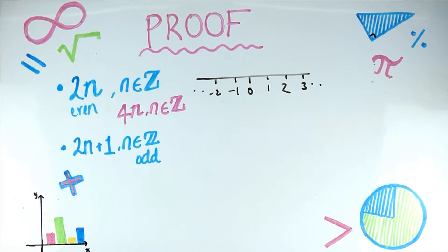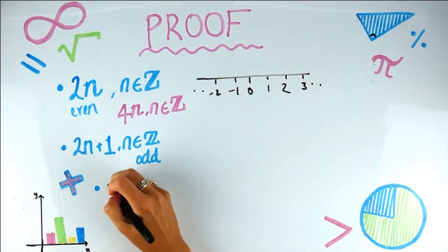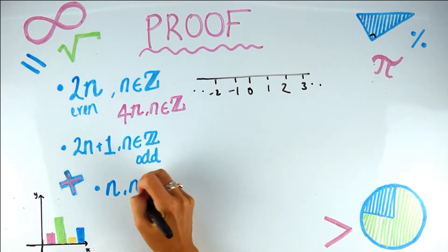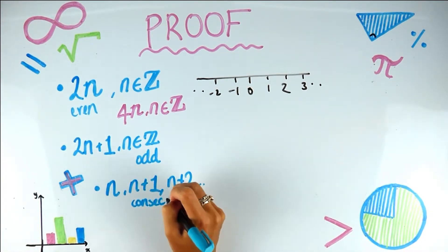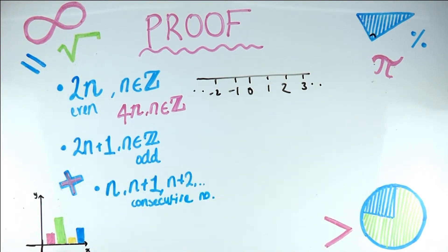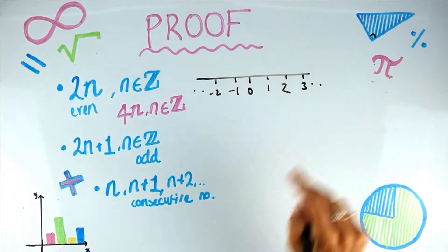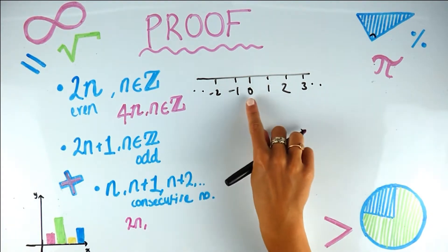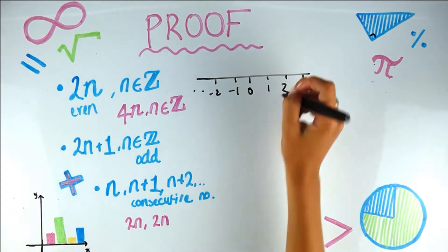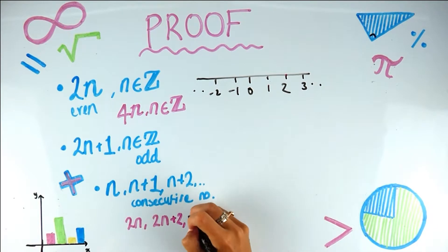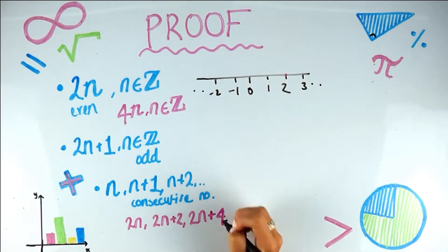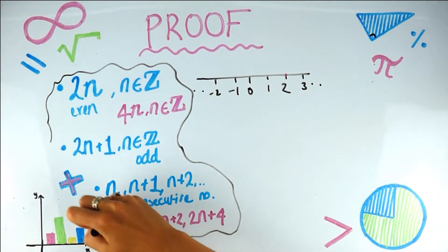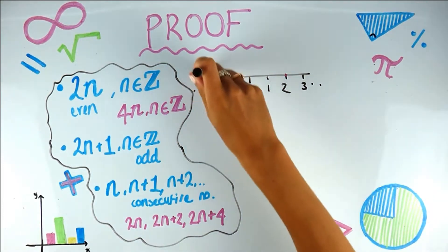We've got all the even numbers; just add 1 and we get the odd numbers. Another useful point is consecutive numbers: if we have n, then n + 1 is the next one along, n + 2 the next. For consecutive even numbers, instead of adding 1 you add 2, so you'd have 2n, then 2n + 2, then 2n + 4.